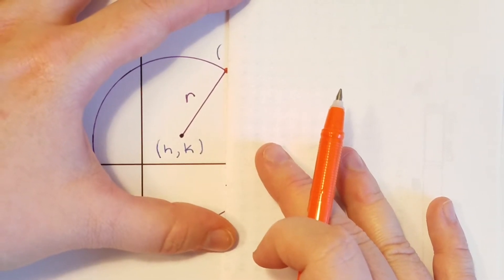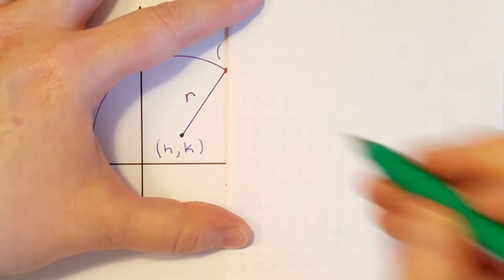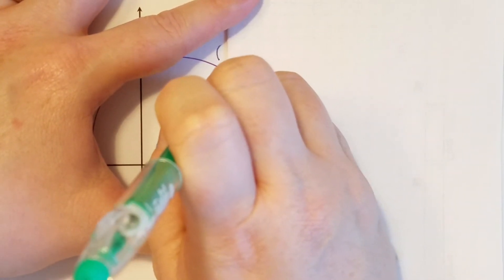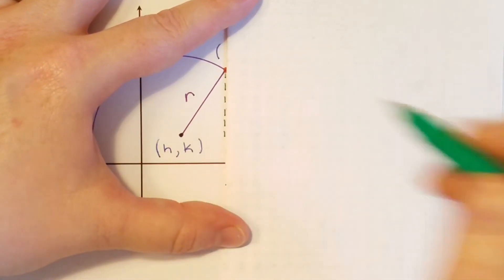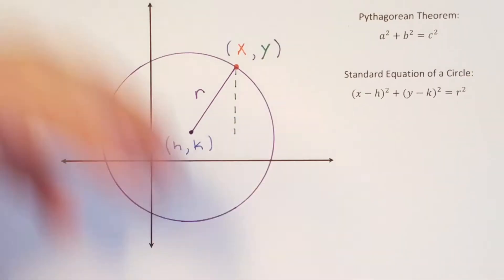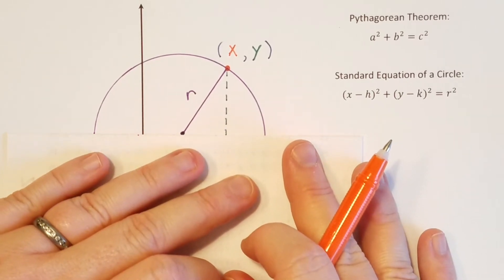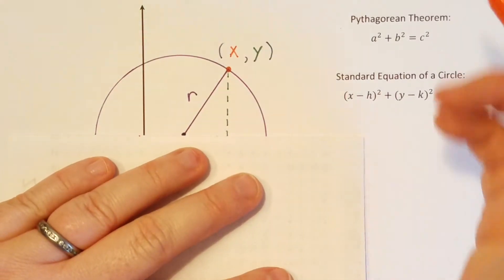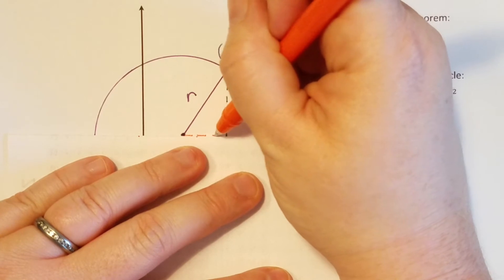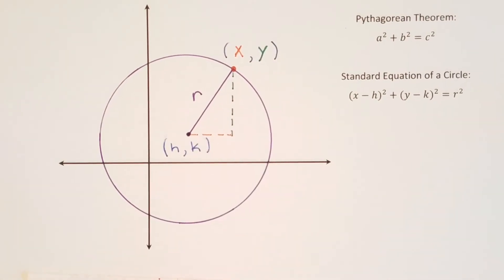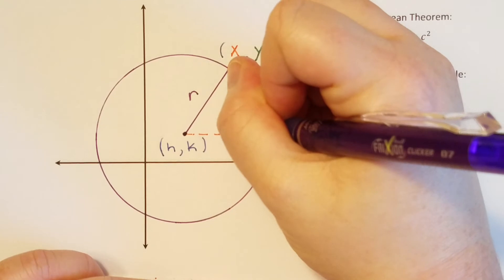So I'm just going to use a straight edge, just trying to make my picture as accurate as possible. So the vertical distance we'll do in green, and then the horizontal distance we'll do in orange. And there is my right triangle.